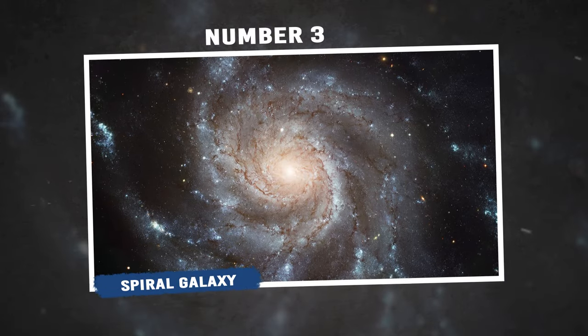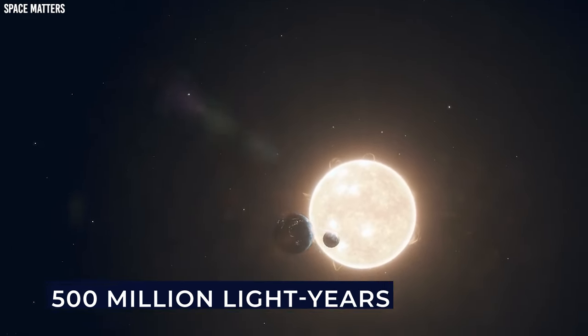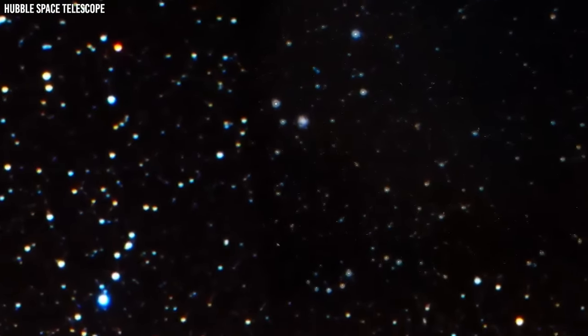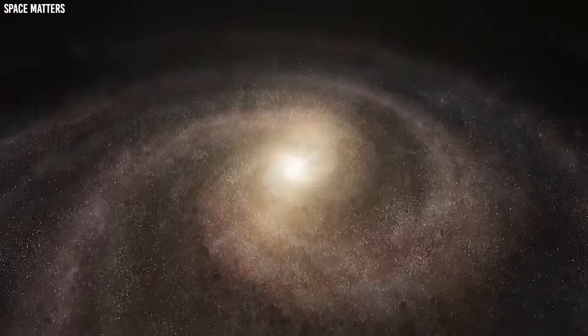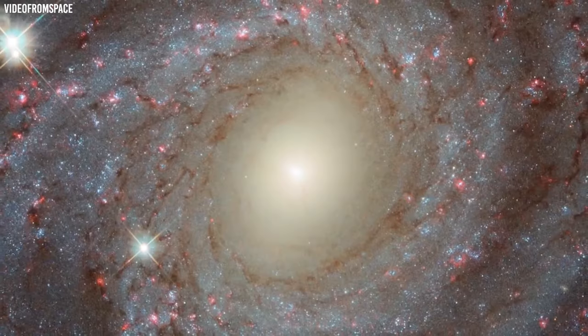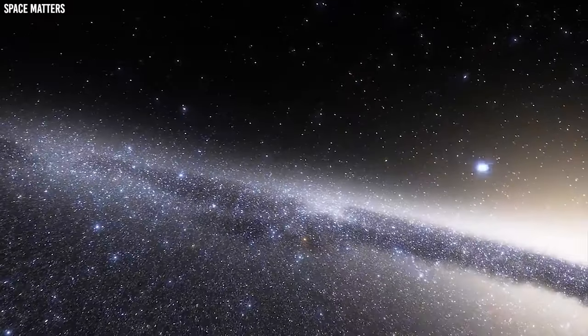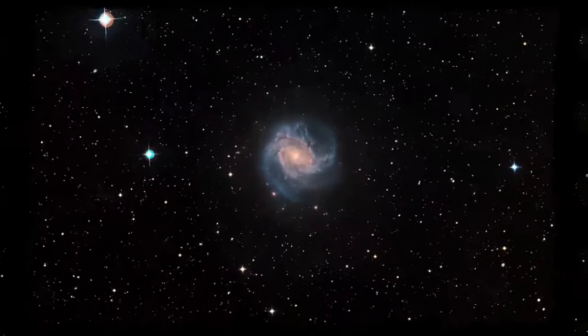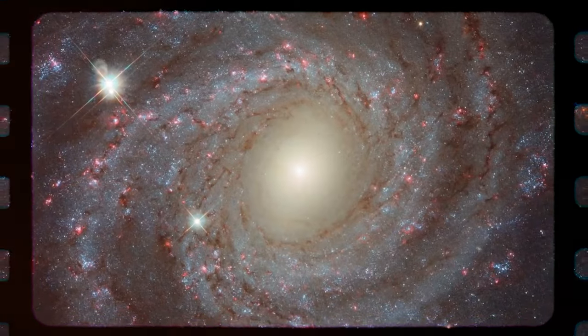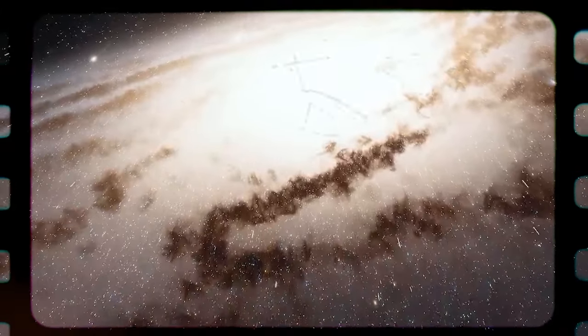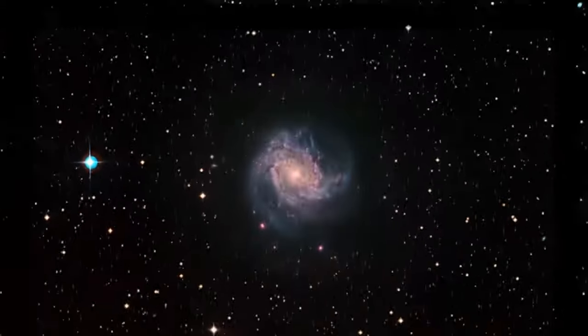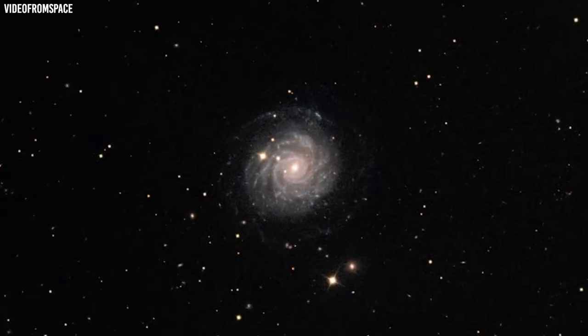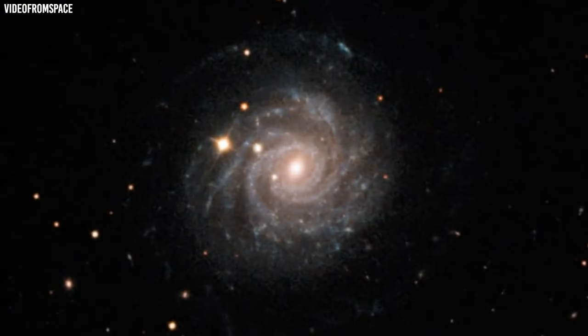Number 3: Spiral Galaxy. The Cartwheel Galaxy, located about 500 million light-years from Earth, is like a celestial masterpiece painted across the cosmos. This stunning spiral galaxy got its name because of its unique shape, resembling a cartwheel in motion. The Cartwheel Galaxy was once a more typical spiral galaxy until it had a dramatic encounter with a smaller galaxy. This collision set off an explosion of star formation and triggered ripples of gas and dust that formed the striking ring shape we see today. In the center of the ring lies a bright, compact core, which is like the galaxy's beating heart. This core is so intense that it's thought to house a supermassive black hole.